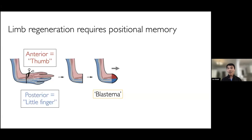Many decades of limb regeneration research in the axolotl have shown that a very important requirement for limb regeneration is positional memory. To go back to that jigsaw puzzle analogy, positional memory is a property of post-embryonic cells in which they retain spatial identities assigned to them during embryonic development, and then use this to direct patterning for post-embryonic processes such as regeneration. Today we're going to talk about one axis in the limb — the anterior-posterior axis, which in humans would correspond to the thumb–little finger axis.